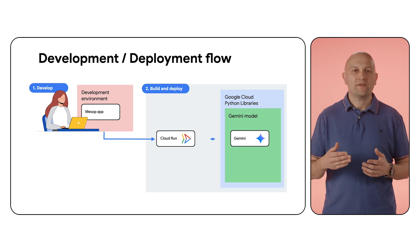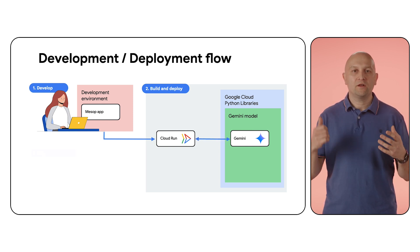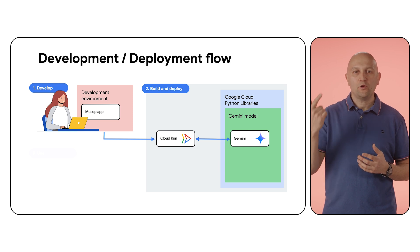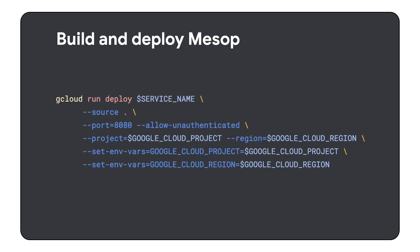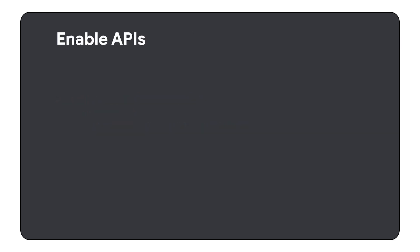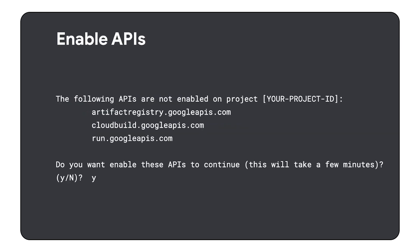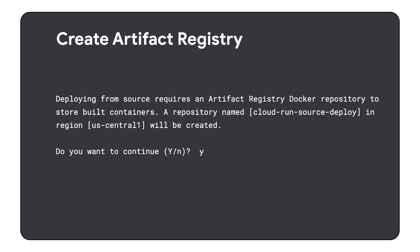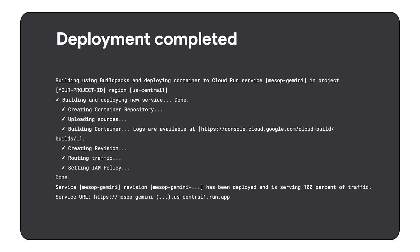Next, you should run the deploy command with the source parameter. It will build the Docker container from the source code, upload it to the Artifact Registry, and deploy it to Cloud Run — all with a single command. Let's execute gcloud run deploy to do that. Note that you may be asked to enable several APIs if you haven't done this before — please answer yes to continue. If this is your first build in this project, you may also see a question about creating a new Artifact Registry — please answer yes as well. It will take a couple of minutes to finish.